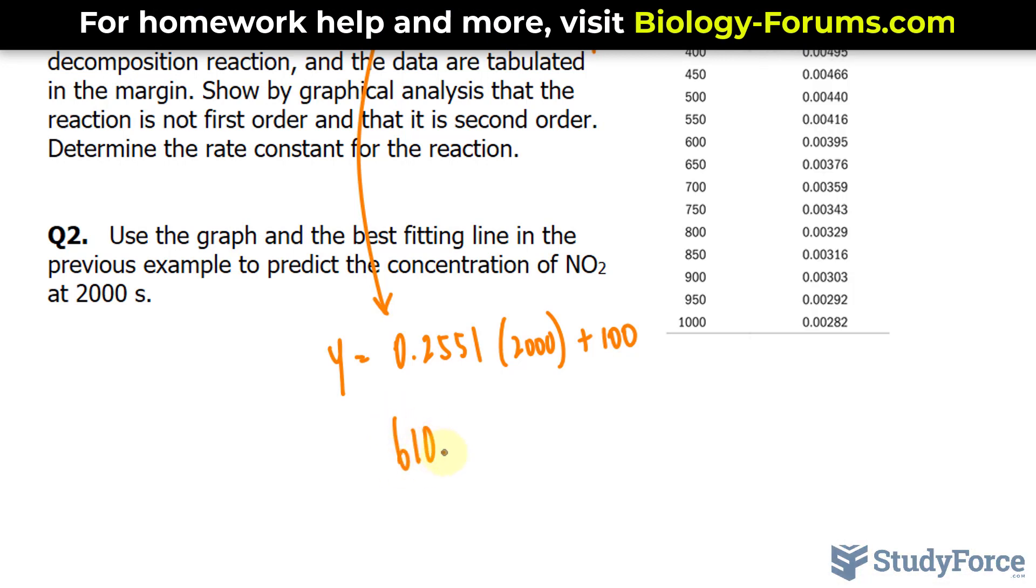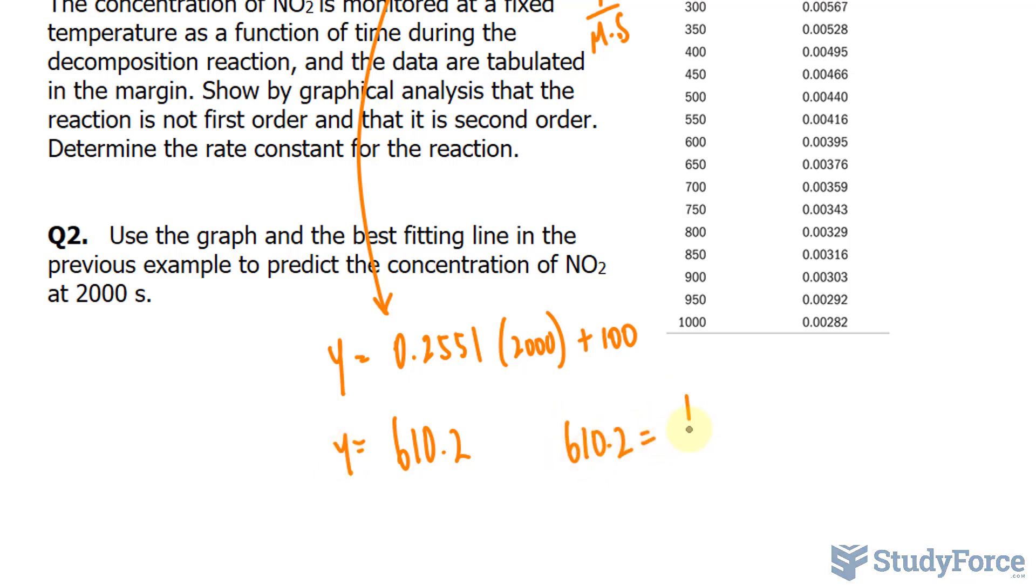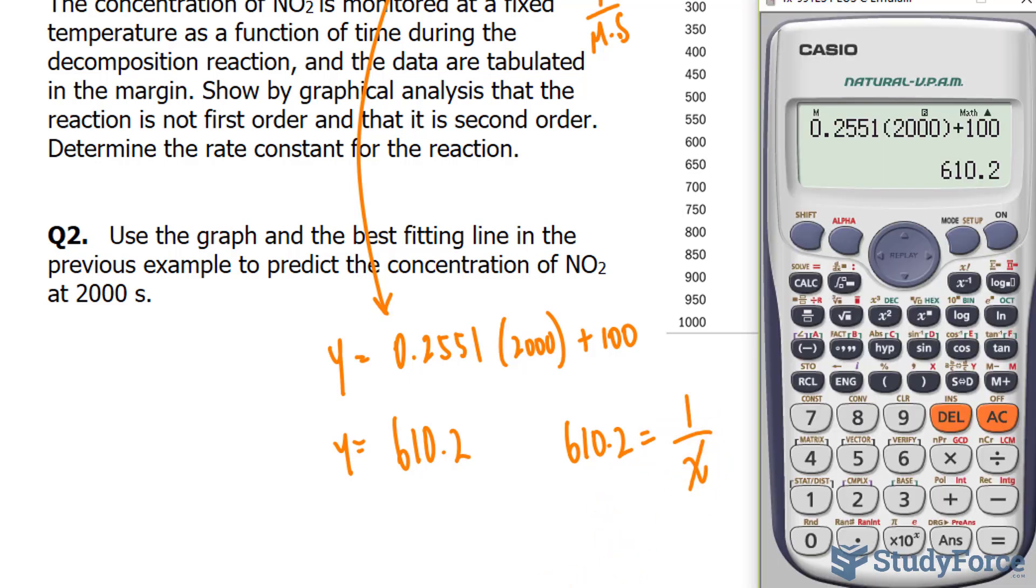Now, don't be fooled into thinking that that's the answer. Because remember what we did. We actually took the reciprocal of the concentration. So now we do the same thing here. Think of it like this: 610.2 is equal to 1 over the concentration we're looking for. So we'll take 1 divided by the answer.